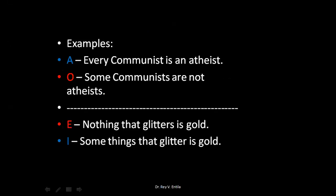Examples: universal affirmative — 'Every communist is an atheist.' This is actually true, because a tenet of communism is that religion is the opium of the people. The O contradictory is the particular negative: 'Some communists are not atheists.' So you can immediately see it's wrong — it contradicts A. One of them is true and the other is false.